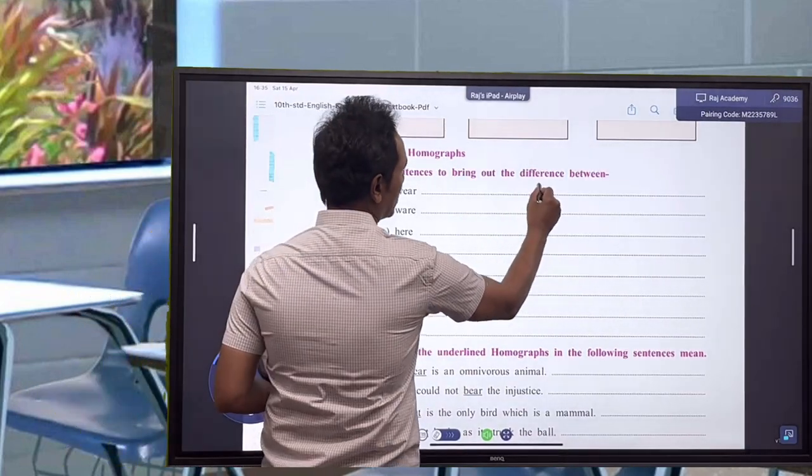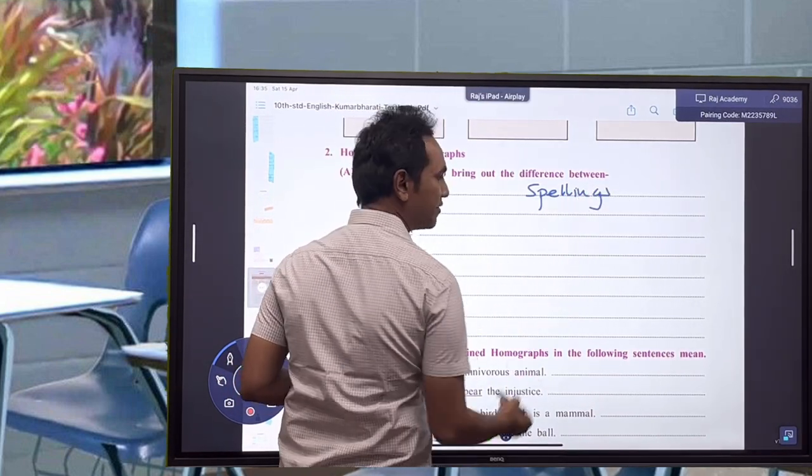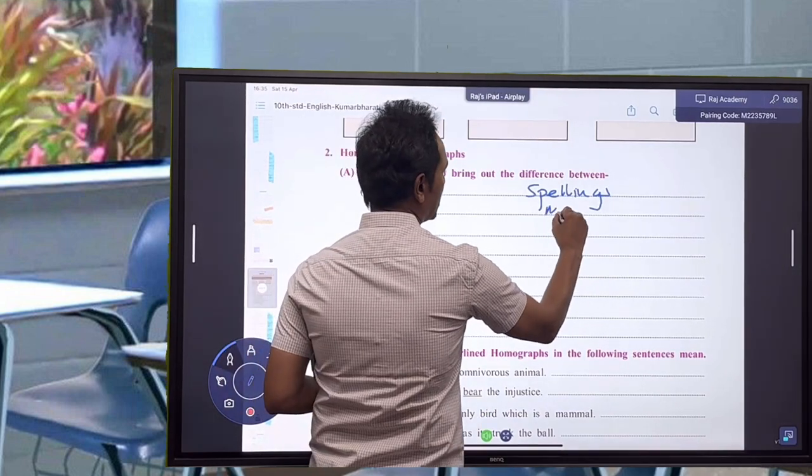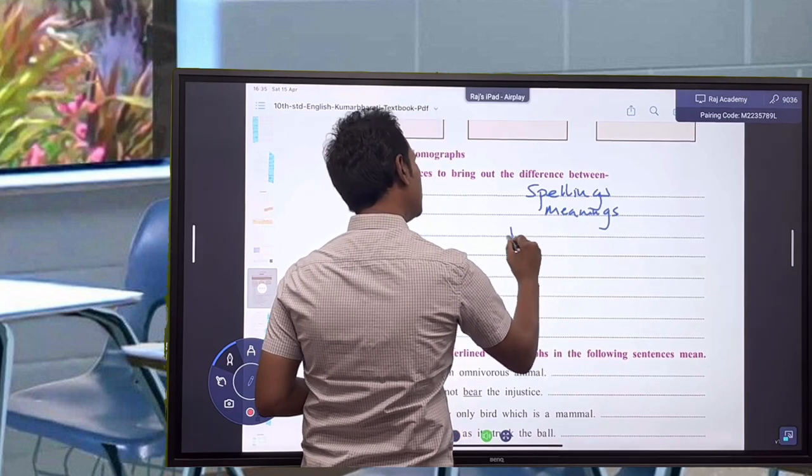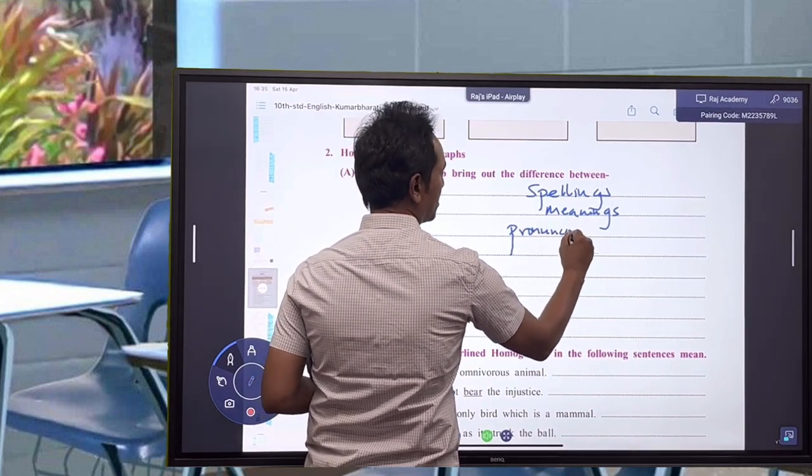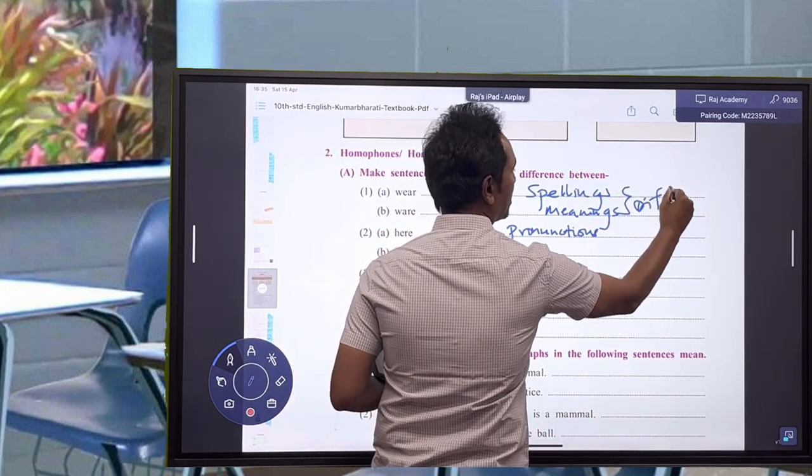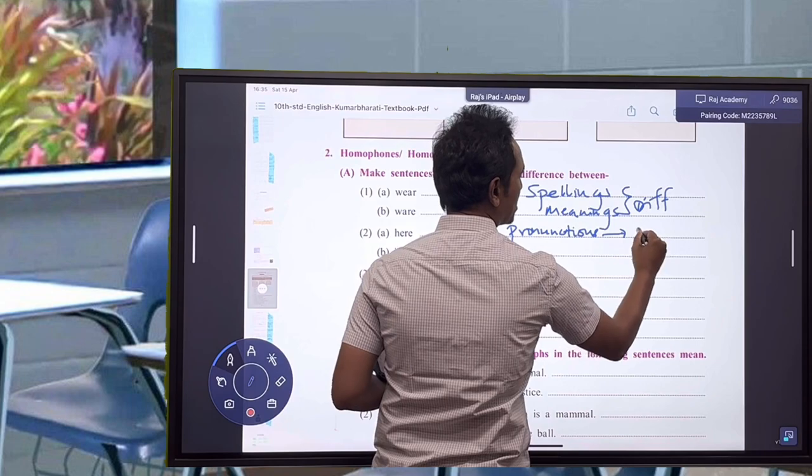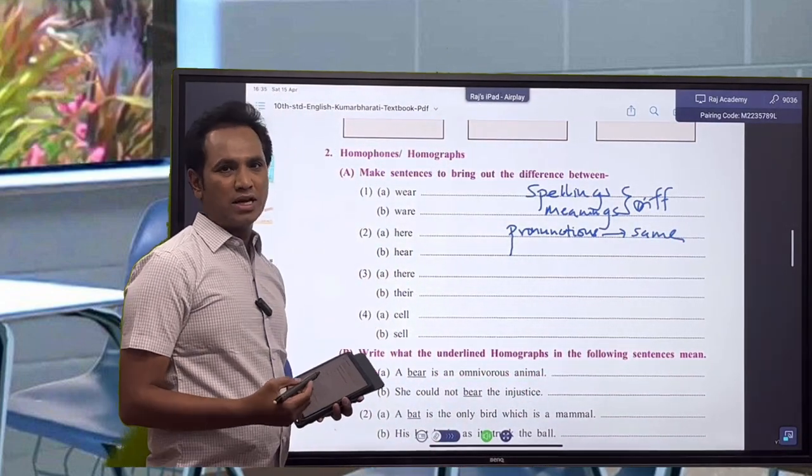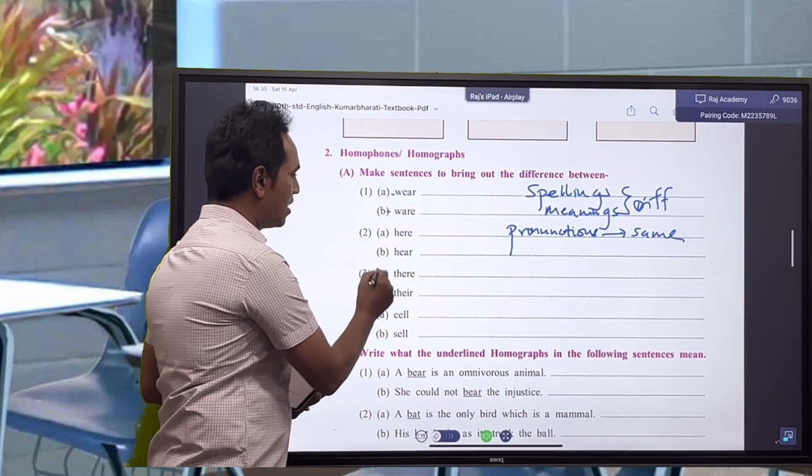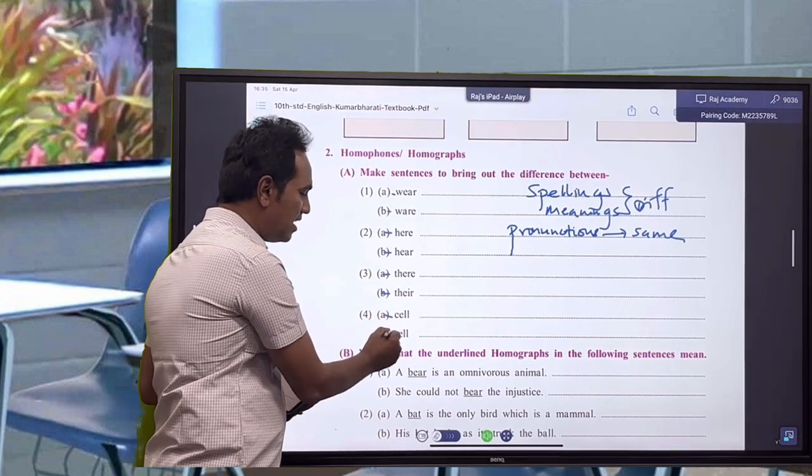Spellings are different, meanings are different, but the pronunciations are the same. For example, just see: where and wear, here and hear, they are and there, sail and sale.